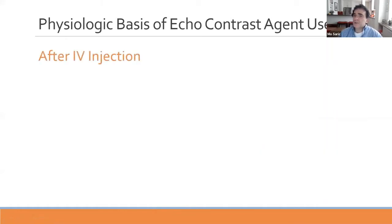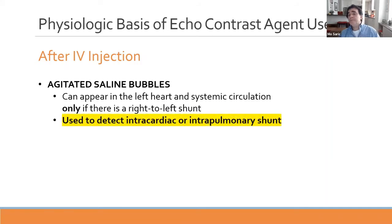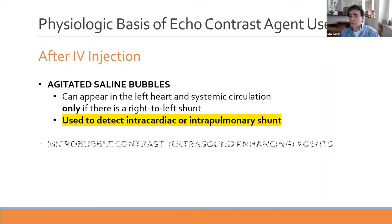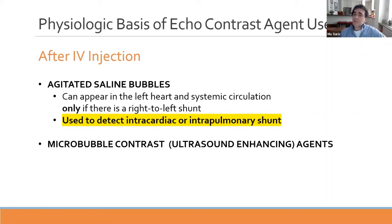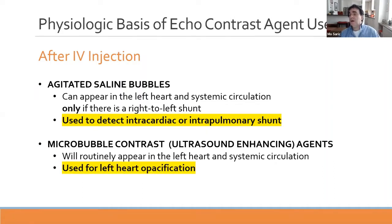What happens to contrast agents after intravenous injection? Agitated saline bubbles can appear in the left heart and systemic circulation only if there is a right-to-left shunt, so they are used to detect intracardiac or intrapulmonary shunts. In contrast, microbubble contrast agents or ultrasound-enhancing agents will routinely appear in the left heart and systemic circulation, and are therefore used for left heart opacification.